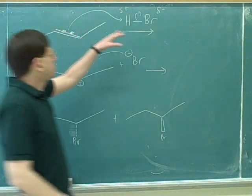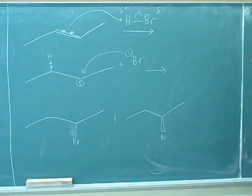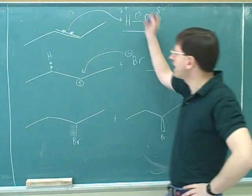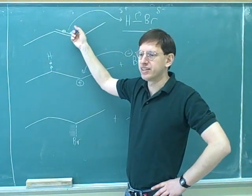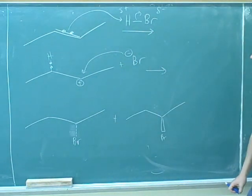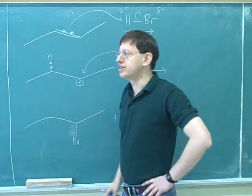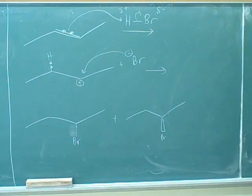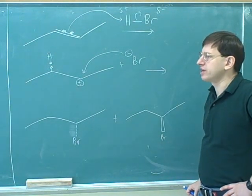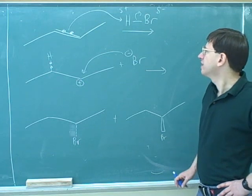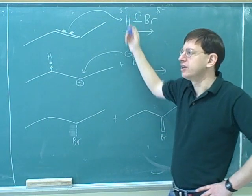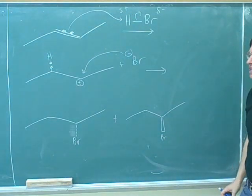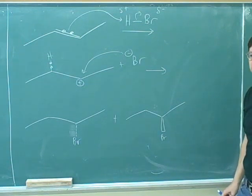Is this substitution, addition, or elimination? It's not substitution because substitution would be replacing one atom with a different atom. This is addition — addition is when you're removing a pi bond by adding two groups to remove it. We're removing the pi bond by adding the hydrogen and the bromine. In particular, this is called electrophilic addition, because the initial attacker is the electrophilic hydrogen. This is our first example of an electrophilic addition.